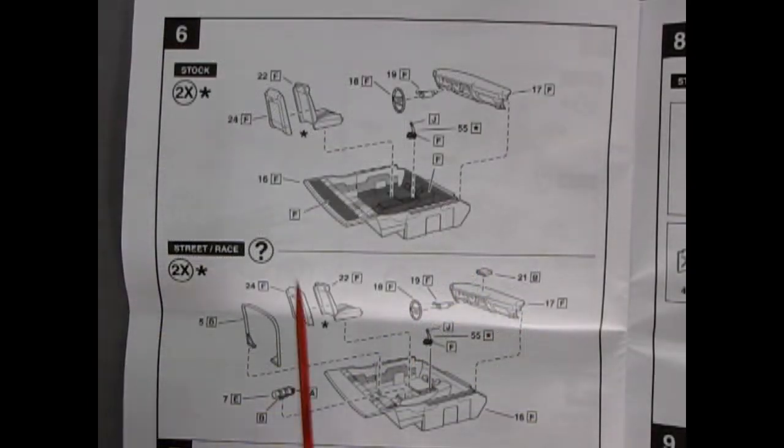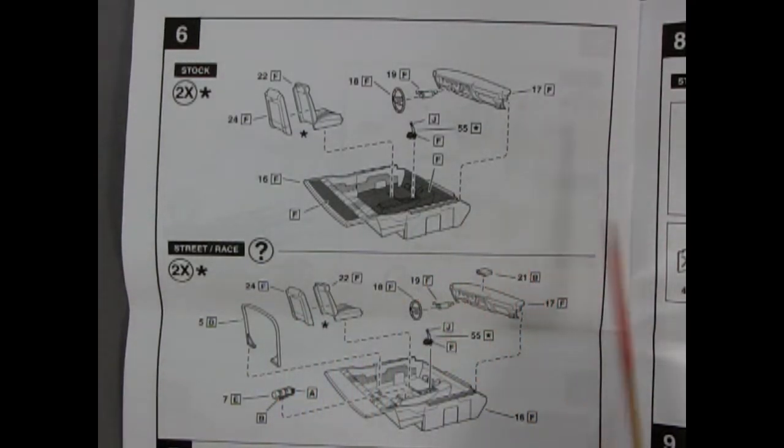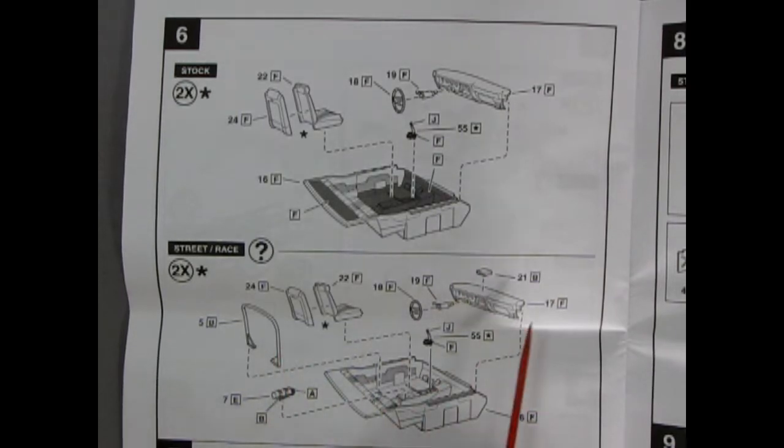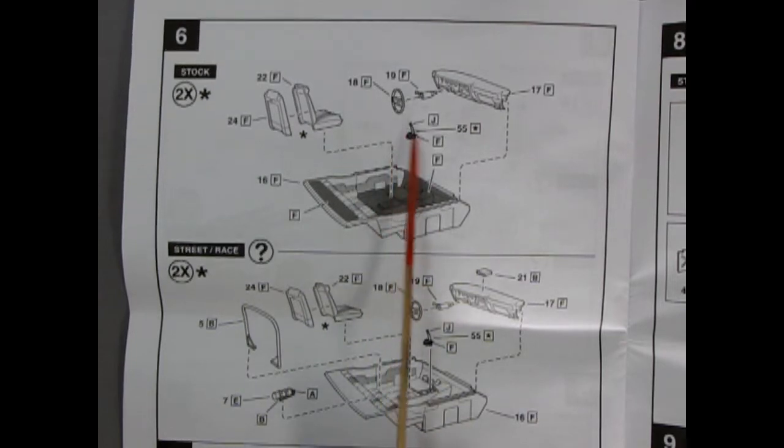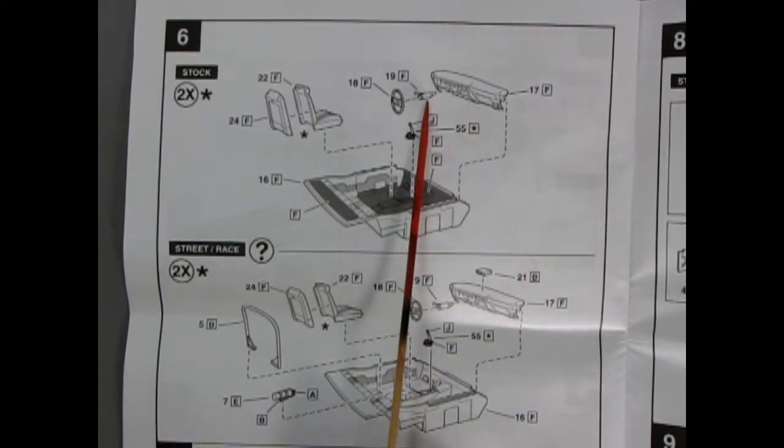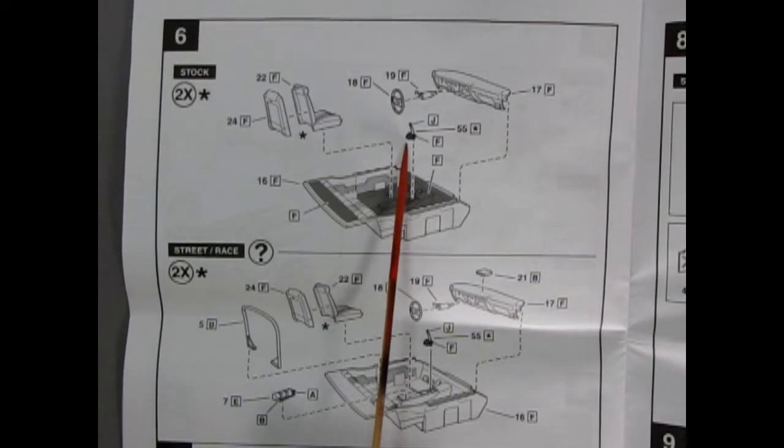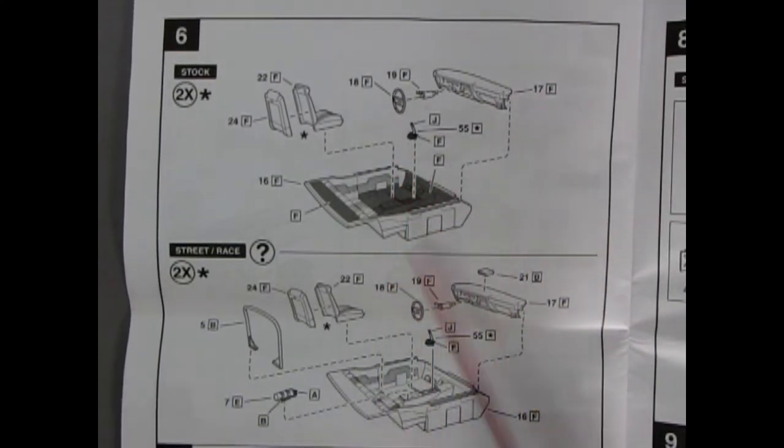Next up we have our interiors, the stock version and our street and race. So they're basically the same except for you get the fire extinguisher, then the roll bar, and this little box up here. However, front bucket seats. The interior is a tub variety. There's your dashboard, your steering column, your steering wheel, and your gear shift lever, and they all go together like so.